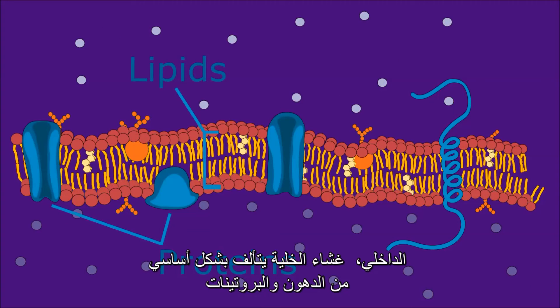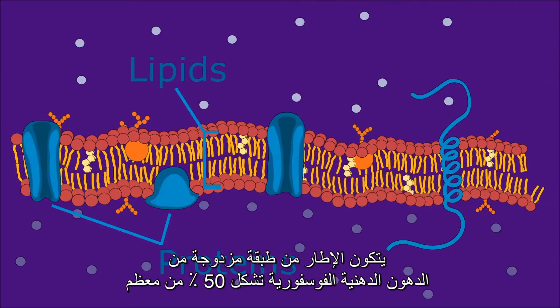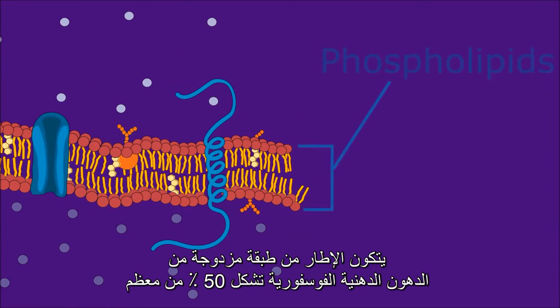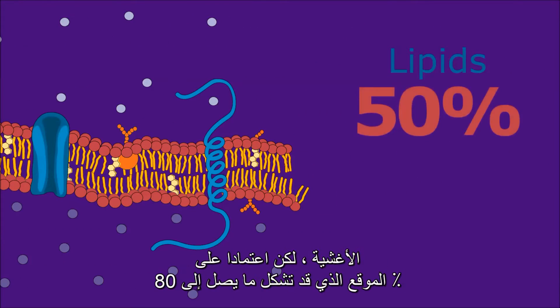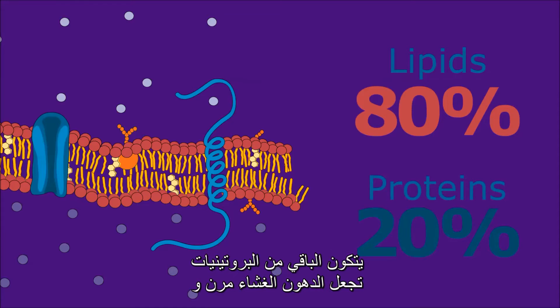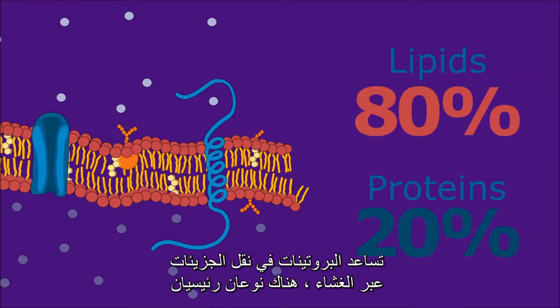The cell membrane is mainly composed of lipids and proteins. Its framework consists of a double layer of phospholipids. Lipids make up 50% of most membranes, although depending on the location, they may make up up to 80%. The remainder is made from proteins. Lipids make the membrane flexible, and the proteins help transfer molecules across the membrane.